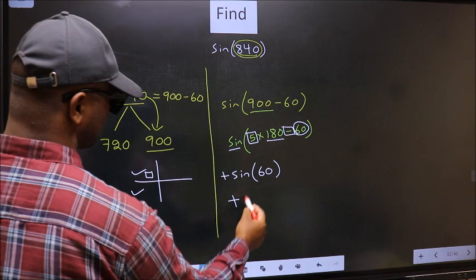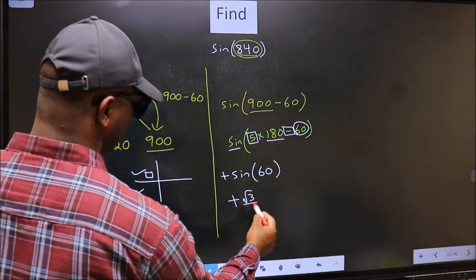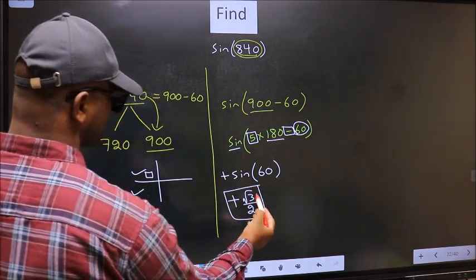So plus sin 60 is root 3 by 2. This is our answer.